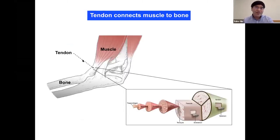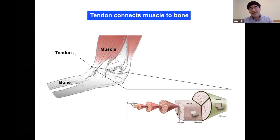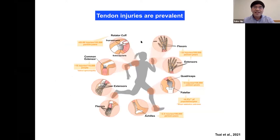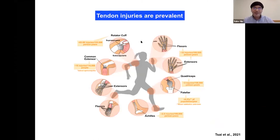First, I'm going to introduce the tendon. Tendon is connective tissue that connects the muscle to the bone. Like most tissue, the tendon is made of tendon cells, which are also called tenocytes. The tendon also has many matrix components, for example type 1 collagen. Tendon injury is a problem that can affect a significant portion of the population. However, so far there are very few treatments for tendon injury, which could be due to a poor understanding of tendon biology — for example, how to make a functional tendon cell and what mechanisms regulate tendon repair.